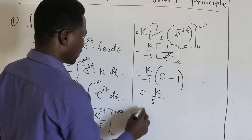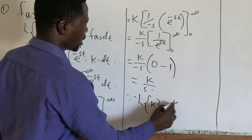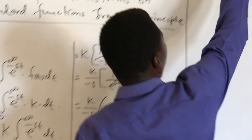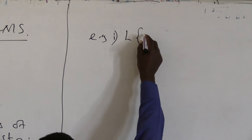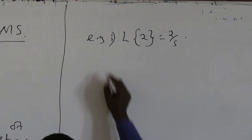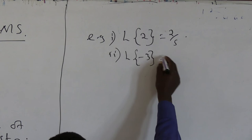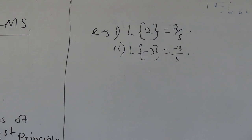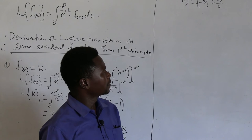Therefore, the Laplace transform of k is equals to k over s. For example: the Laplace transform of 2 is equals to 2 over s, and the Laplace transform of negative 3 is equals to negative 3 over s. So the Laplace transform of any given value will actually be that value all over s.